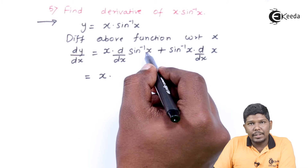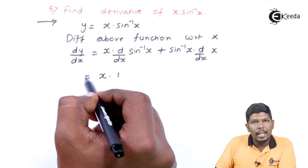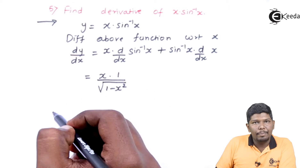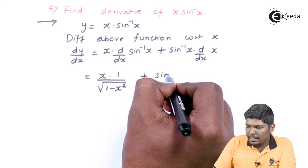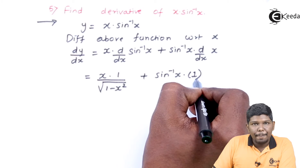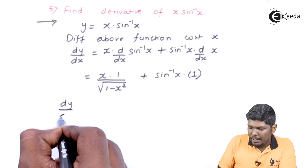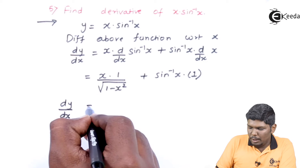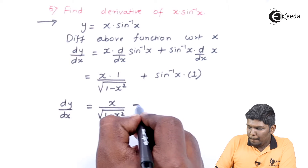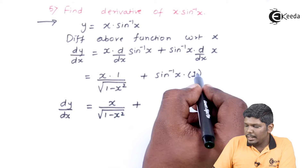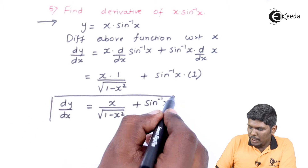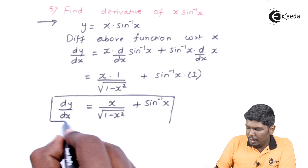x into the derivative of sin inverse x: the derivative of sin inverse x is 1 upon under root (1 minus x squared), plus sin inverse x into the derivative of x, which is 1, giving sin inverse x. So this is the derivative of the given function.